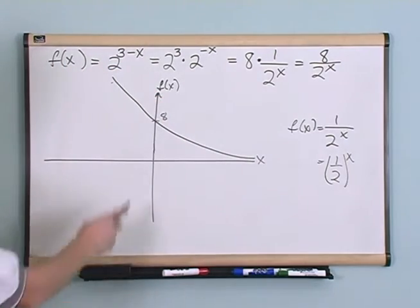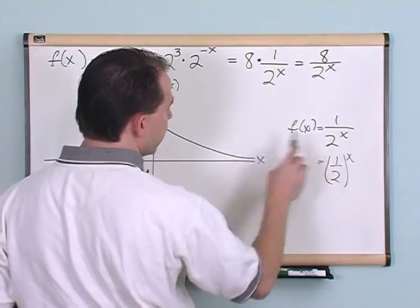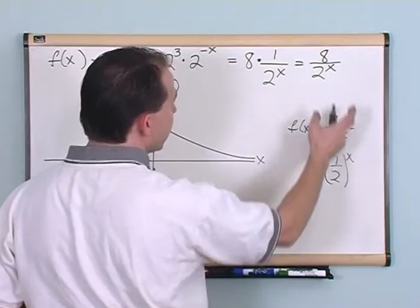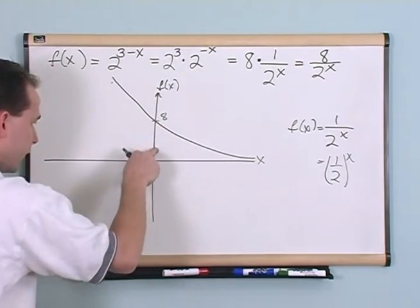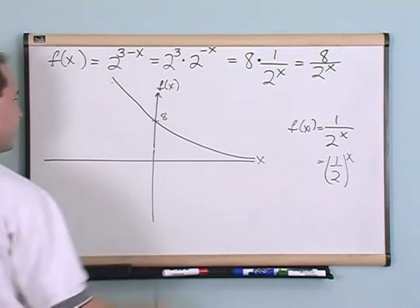It would go through 8 instead of going through 1 because what I have here is I have 1 half to the x power as a graph and I'm multiplying that by 8. So here the point was at 1 and I had to multiply by 8 so the whole graph kind of scoots up.